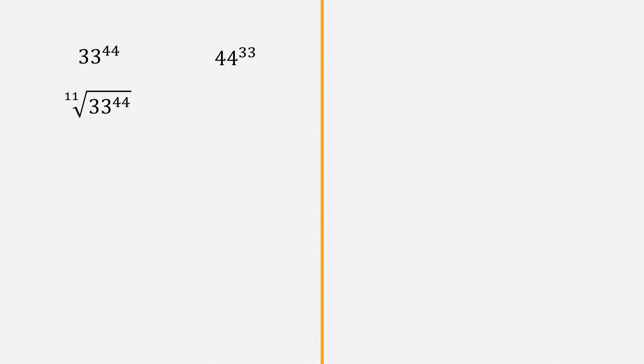So we have 33 to the power 44 on the left side and 44 to the power 33 on the right side. The first thing I'll do is find the 11th root of both sides — the 11th root of 33 to the power 44 and the 11th root of 44 to the power 33.